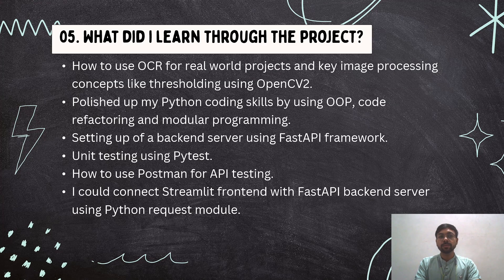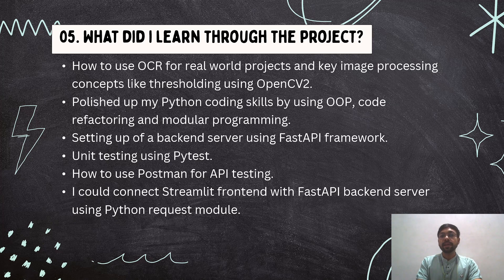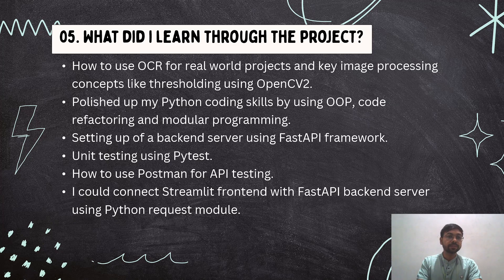So what did I learn through the project? First, how to use optical character recognition for real-world projects, and key image processing concepts like thresholding using the OpenCV library. This project polished my Python coding skills through OOP, code refactoring, and modular programming. I learned how to set up a backend server using the FastAPI framework, and I learned about unit testing using PyTest. I also did API testing using Postman, and finally I connected a Streamlit frontend with the FastAPI backend server using Python's requests module.